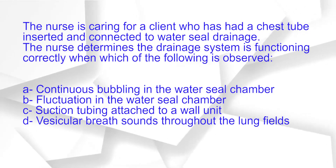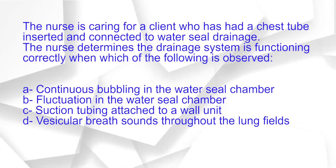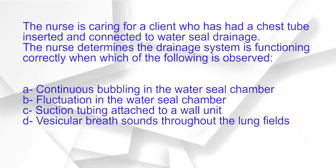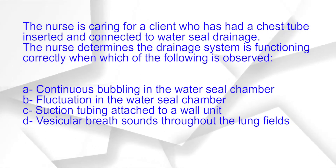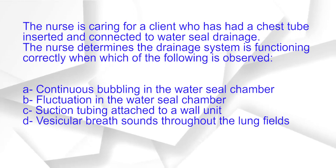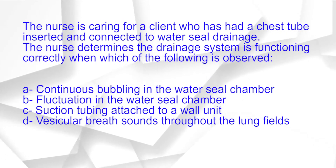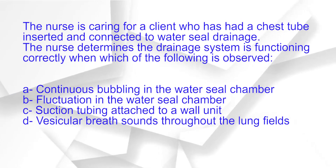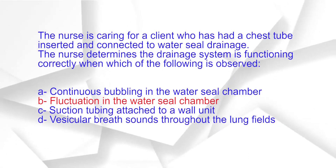The nurse is caring for a client who has had a chest tube inserted and connected to water seal drainage. The nurse determines the drainage system is functioning correctly when: A. Continuous bubbling in the water seal chamber. B. Fluctuation in the water seal chamber. C. Suction tubing attached to a wall unit. D. Vesicular breath sounds throughout the lung fields. The correct answer is option B: Fluctuation in the water seal chamber.